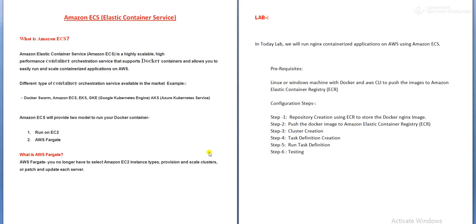Before going with the lab session, I would like to give some overview on Amazon ECS. Amazon ECS is a container orchestration service or tool which allows you to run Docker containers or containerized applications on AWS, providing high reliability. In the market, you will get different types of container orchestration tools: Docker Swarm, Amazon ECS, EKS, GKE (Google Kubernetes Engine), and AKS (Azure Kubernetes Service). Docker Swarm and GKE videos have been uploaded. EKS and AKS will be uploaded in upcoming days.